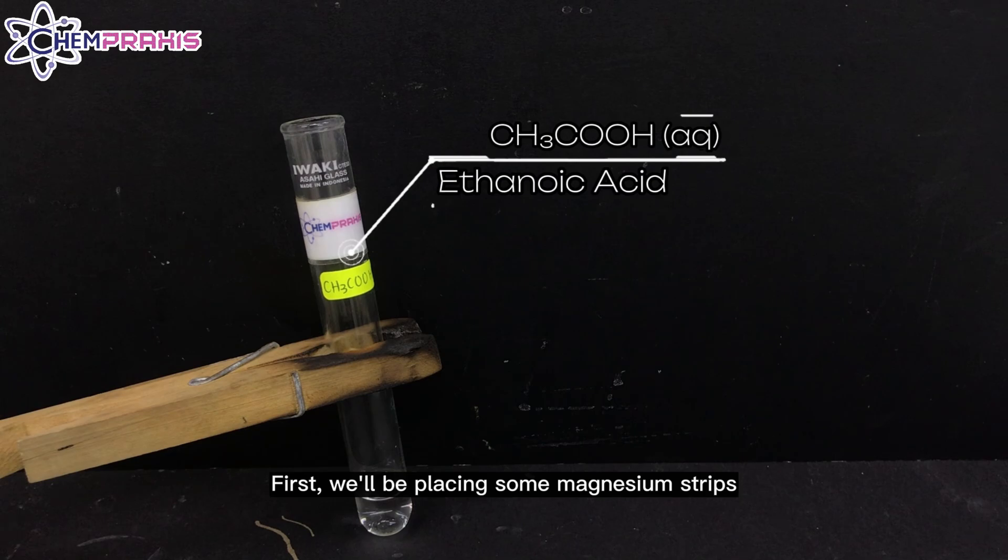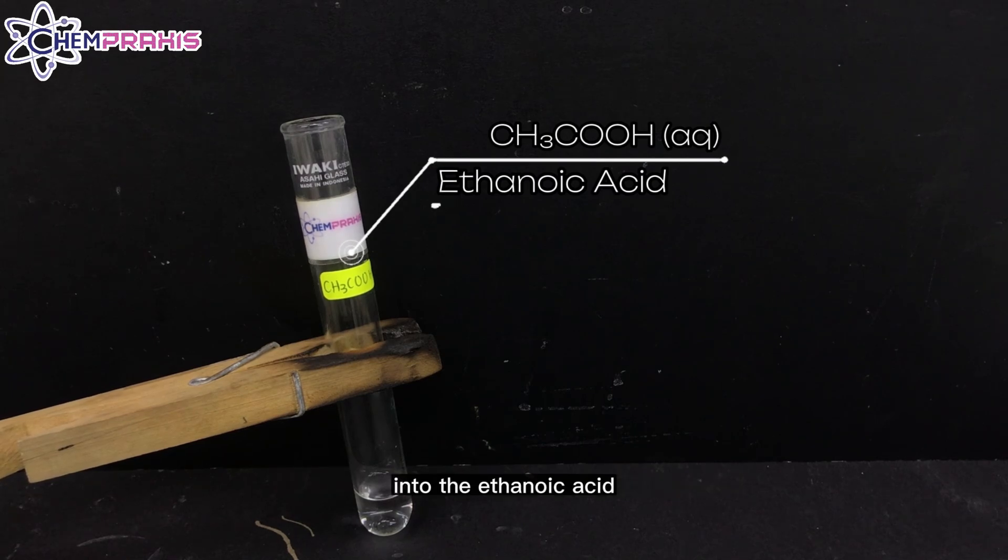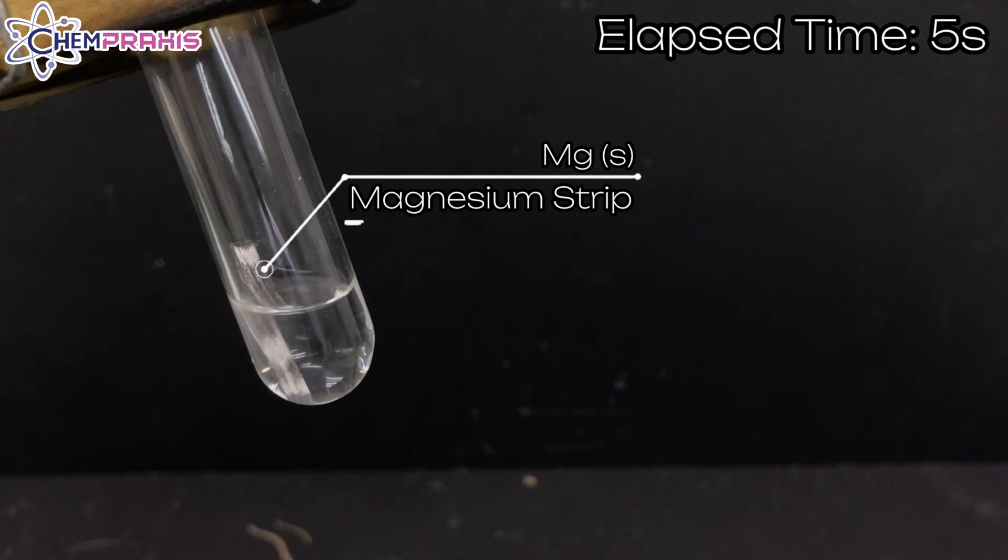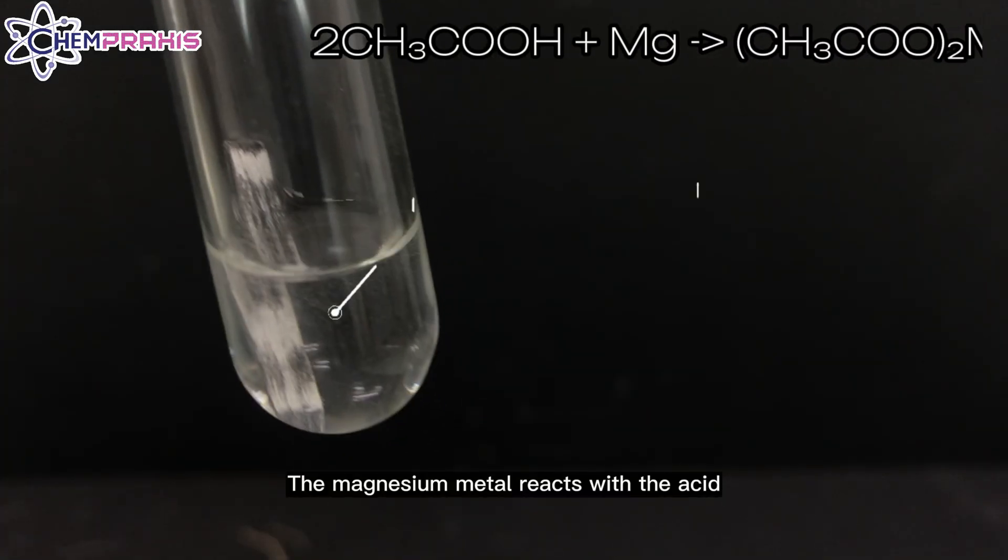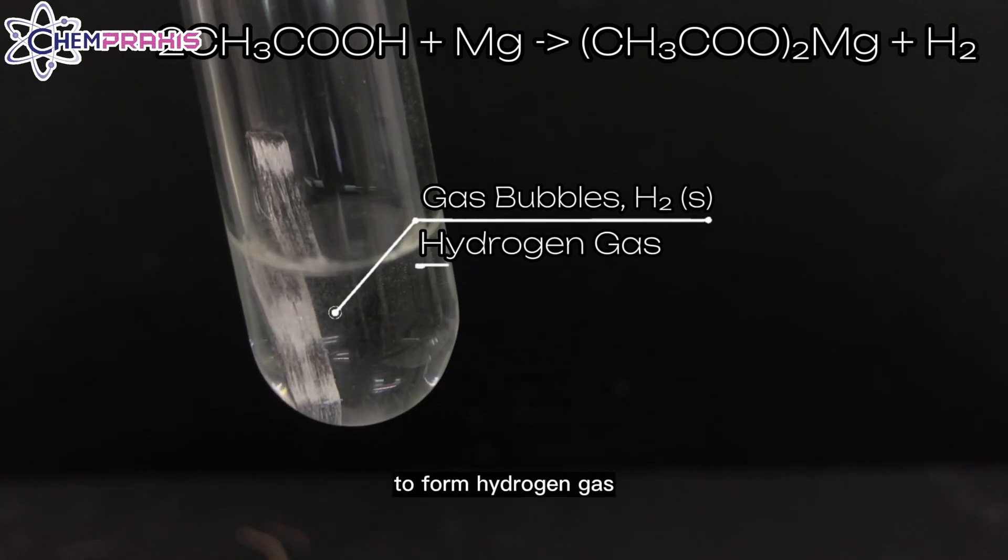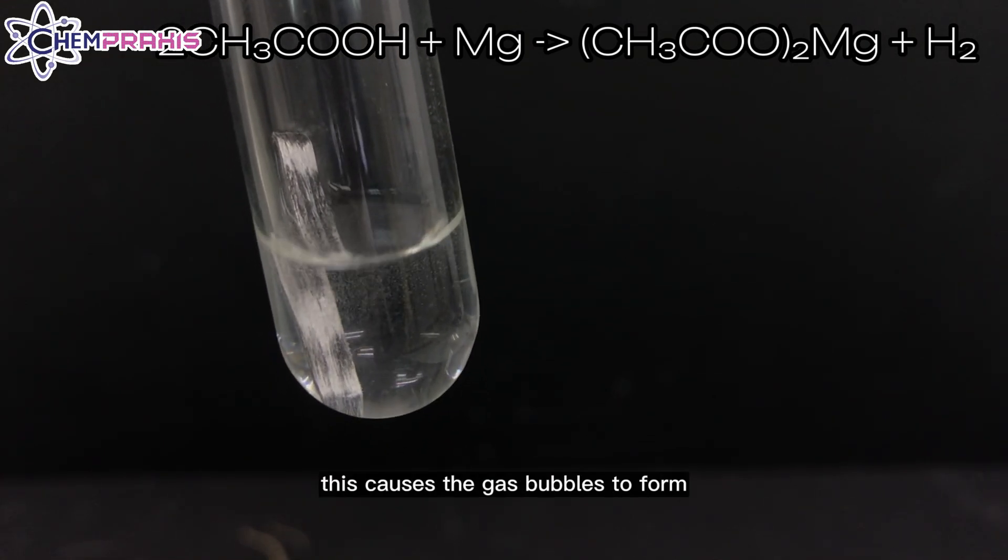First, we'll be placing some magnesium strips into the ethanoic acid. Gas bubbles are being produced. The magnesium metal reacts with the acid to form hydrogen gas. This causes the gas bubbles to form.